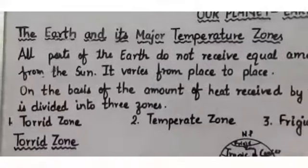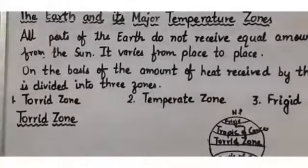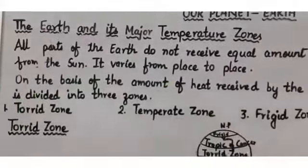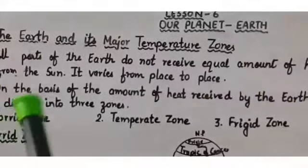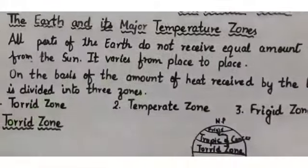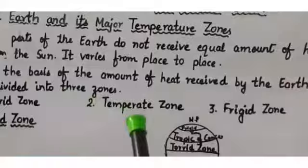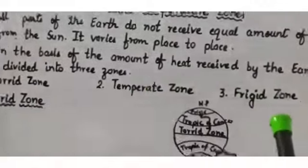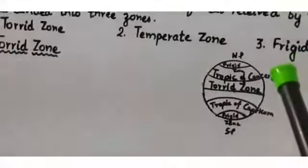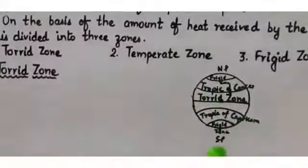On the basis of the amount of heat received from the sun, the Earth is divided into three zones. The first is the torrid zone, the second is the temperate zone, and the third is the frigid zone. You can see all these zones in this picture — these are the temperature zones of the Earth.